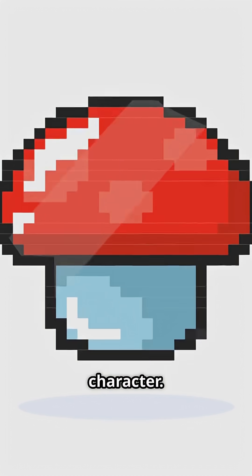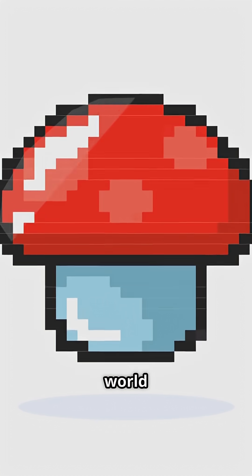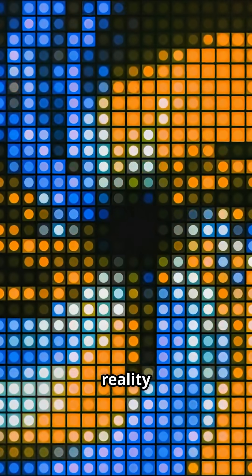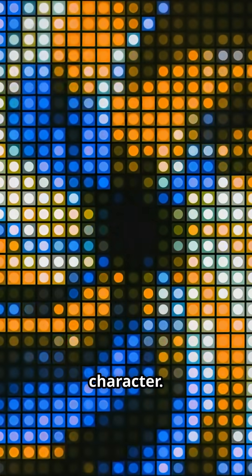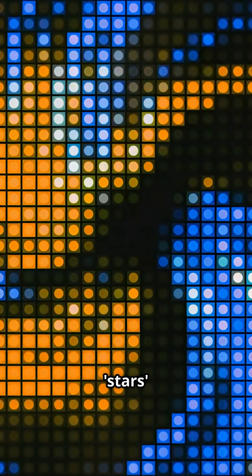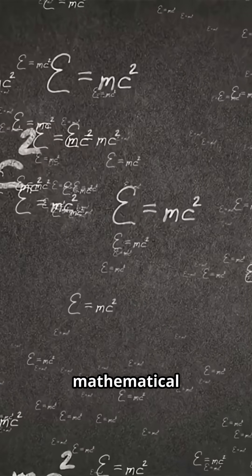Think of a video game character. It sees its world as mountains and rivers. But we know its reality is just code. Tegmark argues we are like that character. Our mountains and stars are just the user interface for a mathematical structure.